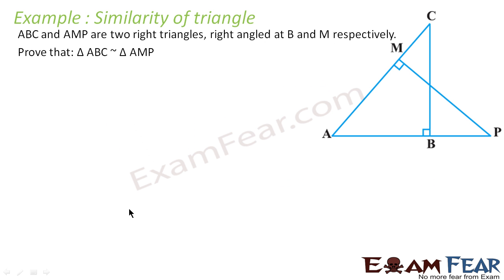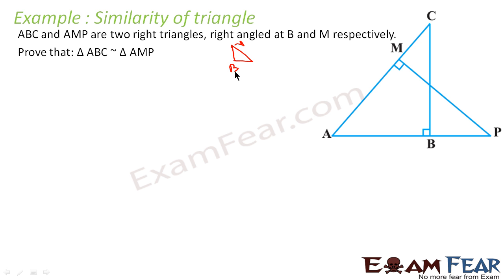Let's take one more example. ABC and AMP are two right triangles, right angle at B and M respectively. We have to prove that triangle ABC is similar to triangle AMP. First, let's draw triangle ABC — since B is the right angle, we draw it accordingly.